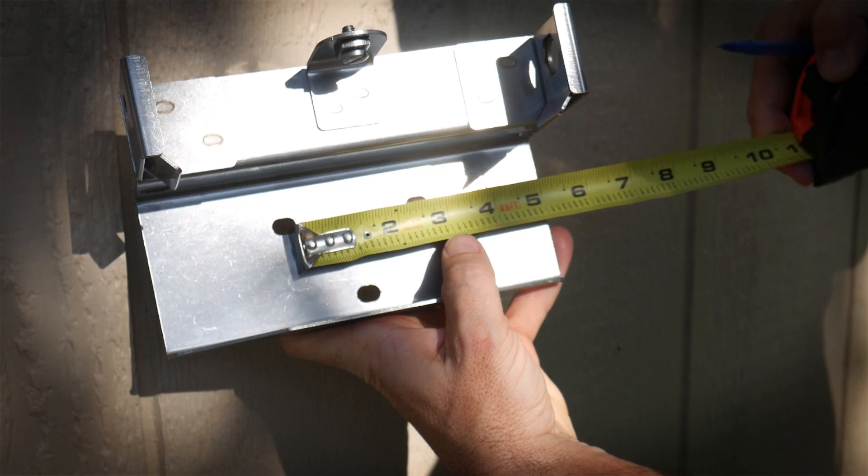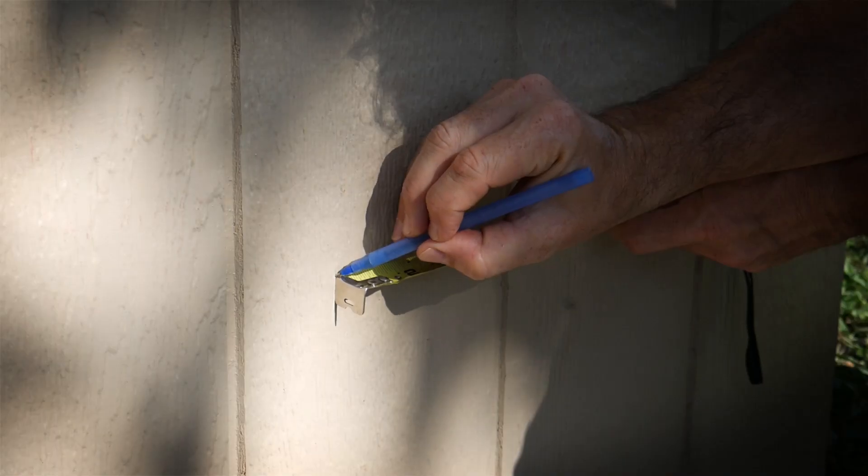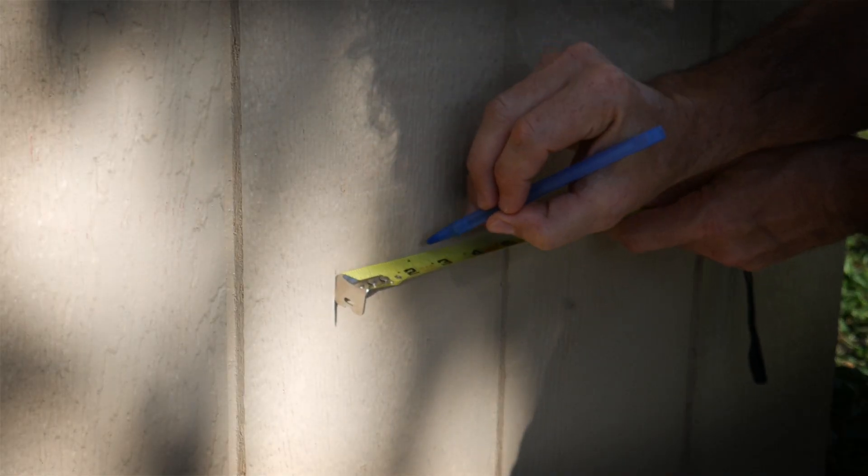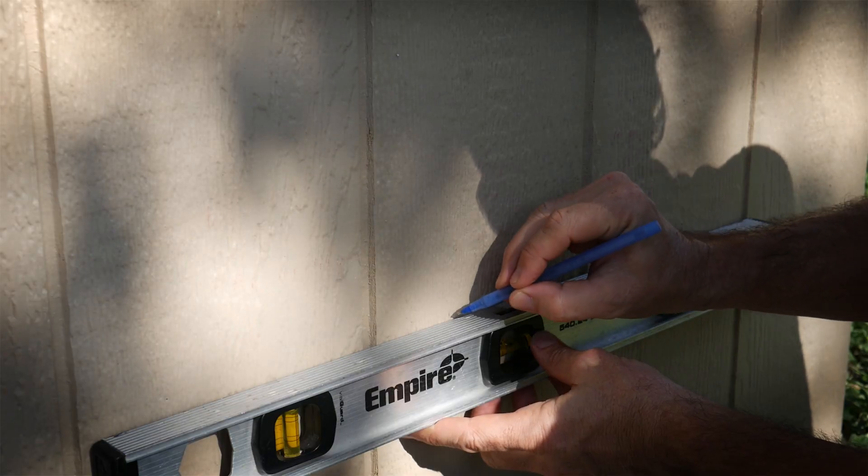Measure the distance between the bracket holes. Transfer that measurement onto the wall. Make sure the marks are leveled.